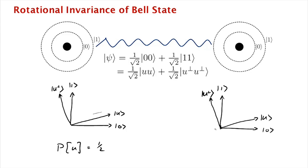So it doesn't matter which rotated basis you measure in, you will always get the same result for both the qubits if they are entangled.